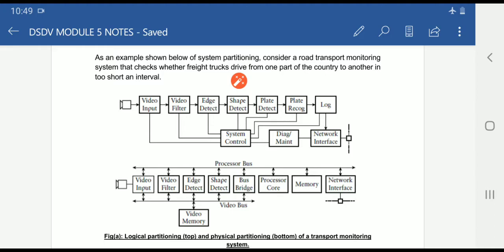Here we have considered one block diagram. In this block diagram, the top level represents logical partitioning and the bottom level represents physical partitioning. We will discuss how logical partitioning is important before it is implemented using physical partitioning.